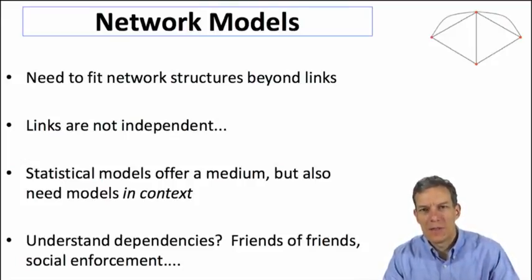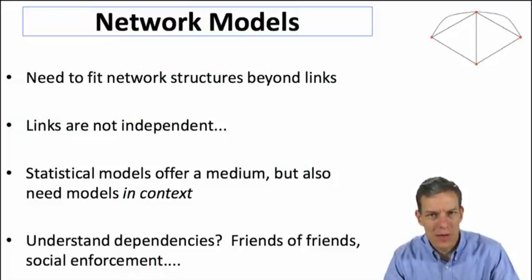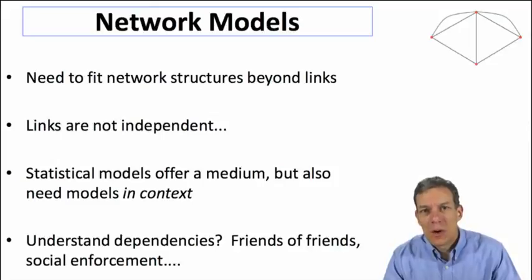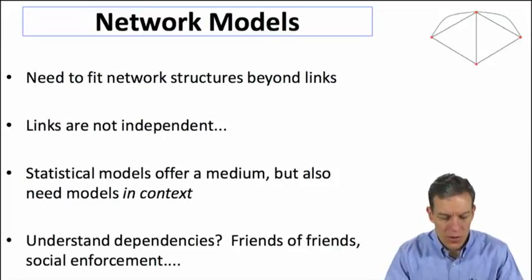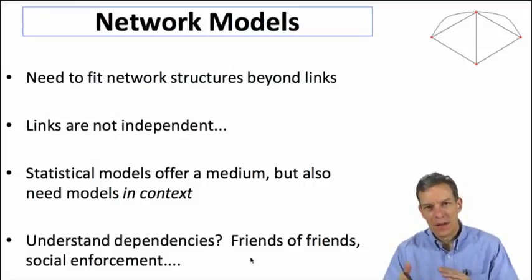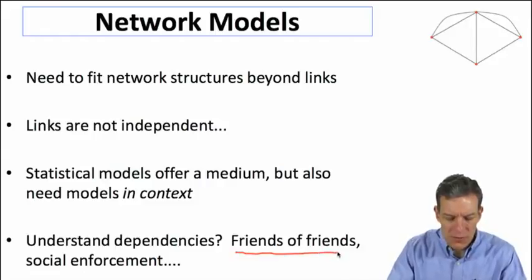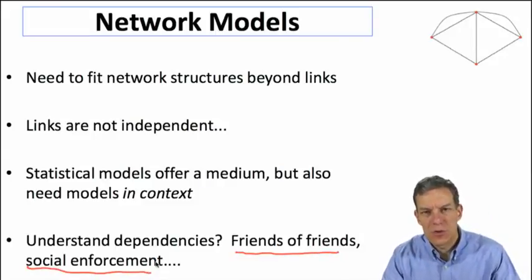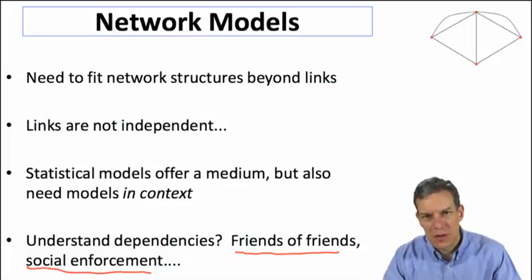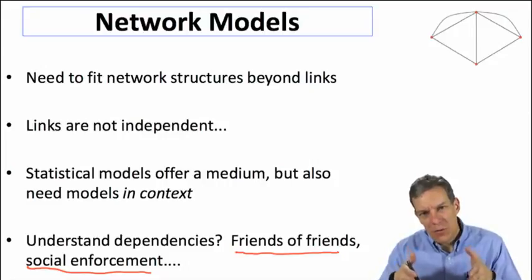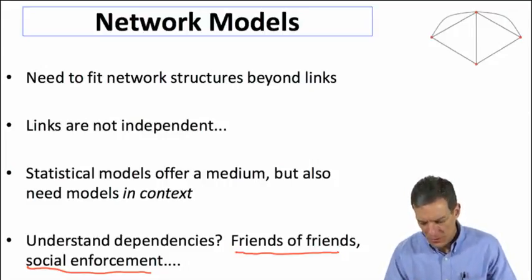We also need to put these models in context, because we need to know what to include — is it triangles, larger cliques, or stars? What kinds of shapes should be generated and measured? Another limitation is that this still doesn't quite answer why some of these patterns exist. Understanding why we get particular patterns of triangles will come from other models — things like friends of friends, social enforcement, and strategic formation — which will give reasons why certain structures emerge.